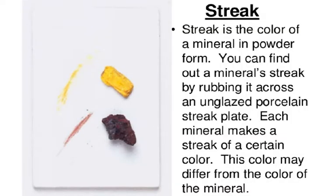The color of the mineral may not be the best way to identify it, but one way that color can help us is if we do something called streak. We use a piece of unglazed porcelain and rub the mineral against it, and we'll see the actual color of the inside of the mineral, not the outside. One mineral is yellow and left a yellow streak - that's sulfur. The other is a brownish-blackish colored mineral and it leaves a rusty, reddish colored streak - that's hematite.